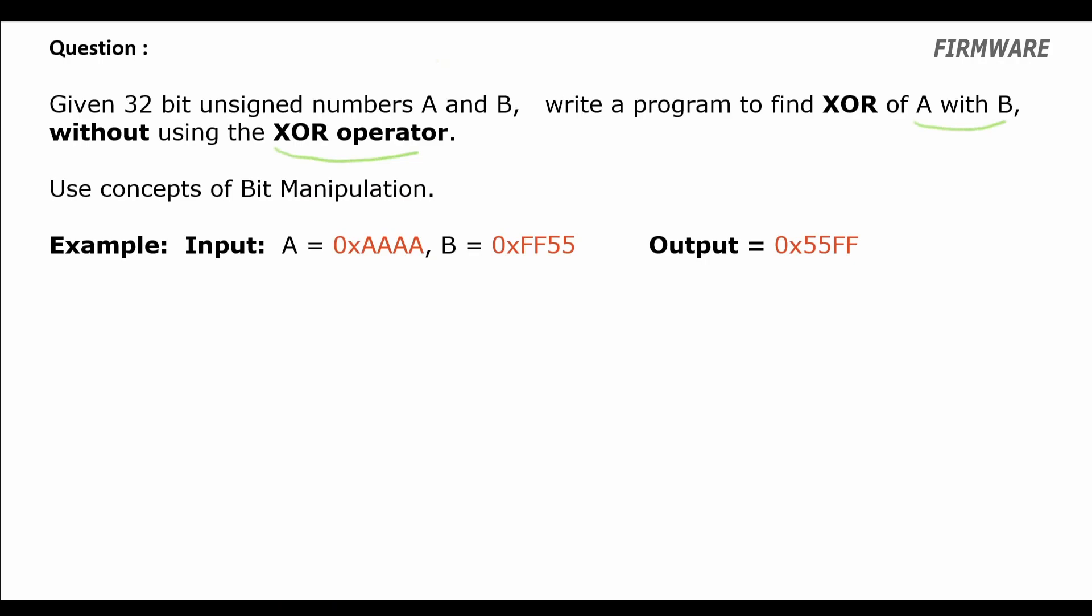Okay, please pause this video now and start coding. Let's take a small example. We will take A as 6 which is 0110 in binary and let's take B as 10 which is 1010 in binary.